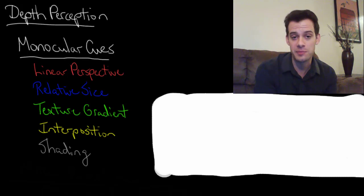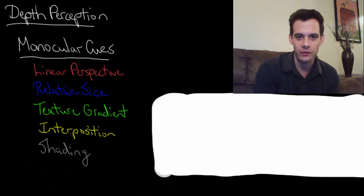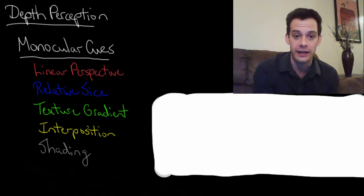Next we have interposition. This is just the idea that if something blocks the view of another object then it's probably closer to you. If I have my hand here and you can't see my face anymore, well then that tells you that my hand is closer to you than my face otherwise it wouldn't block it.